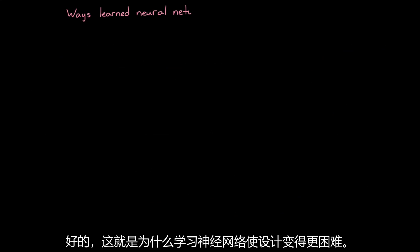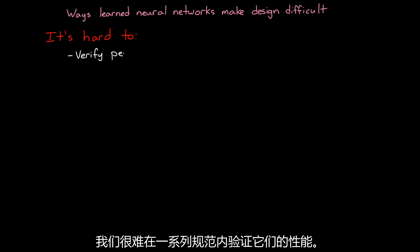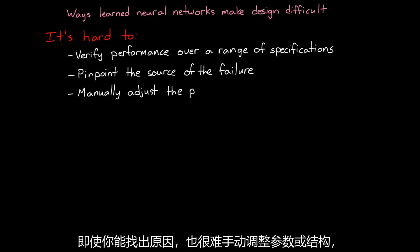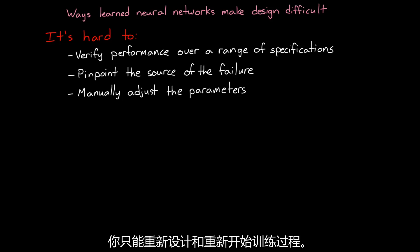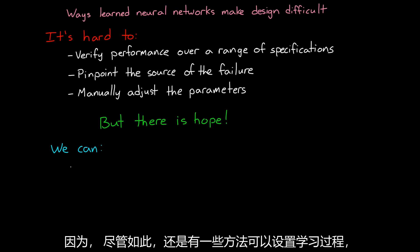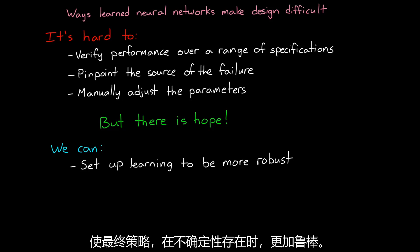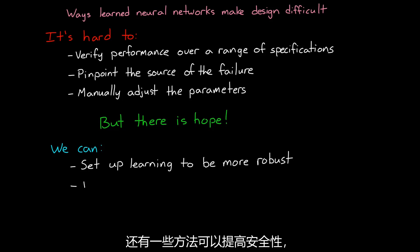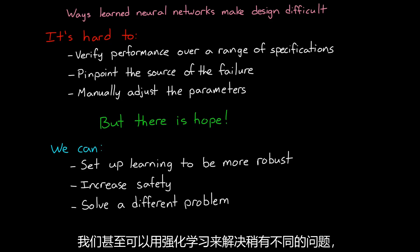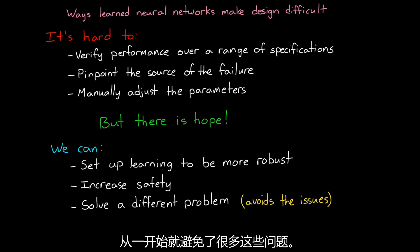So these are some of the ways that using learned neural networks makes design difficult. It's hard to verify their performance over a range of specifications. And if the system does fail, it's hard to pinpoint the source of the failure, and even harder to manually adjust the parameters or structure — leaving you with the only option of redesigning and starting the training process over again. But I don't want to destroy your confidence in reinforcement learning as a useful tool for production systems, because there are ways to set up learning so that the resulting policy is more robust in the presence of uncertainties, and ways to increase safety. We can even use reinforcement learning to solve a slightly different problem that avoids a lot of these issues in the first place.